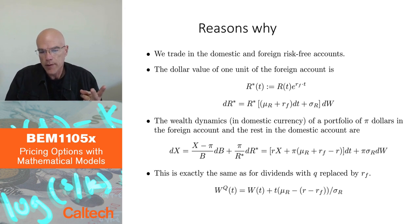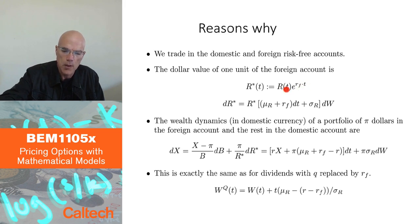So we are going to have two assets to trade in, the domestic bank and the foreign bank, the risk-free accounts. And I want to switch everything to dollars. So I'm going to look at the one unit in the foreign bank account, which after time t gives me e^(r_F × t) units of the foreign currency. But I'm going to transfer that into dollars by multiplying by R(t). I want the dollar value, the domestic value of the foreign bank account. I'm going to call that R*. So this is this product.